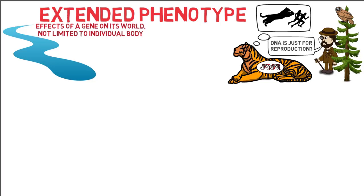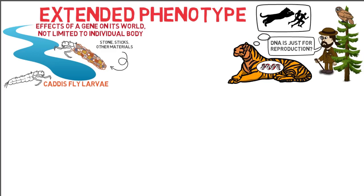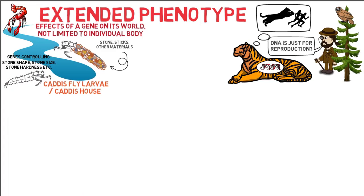The caddisfly larvae live at the bottom of the riverbed and stick together stones, sticks, and other materials to build itself a mobile home as a protective covering for its vulnerable body. The caddisfly's house is an adaptation of evolution, much like the hard shell of crustaceans. Natural selection influenced the larvae's behavior, with genes indirectly controlling variation in caddisfly houses — hypothetically for stone shape, stone size, stone hardness, etc. The stone hardness is an extended phenotype of the caddisfly's genes.